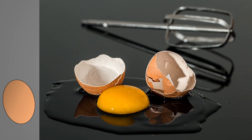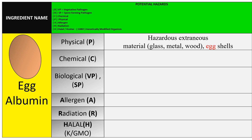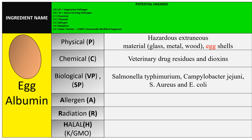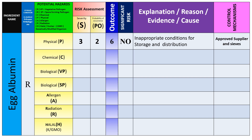The next example is the egg albumin hazard risk assessment — the same process applies to all raw materials. The HACCP team must all be present for this brainstorming. Physical hazards include hazardous extraneous materials: glass, metal, wood, and egg shells. Chemical hazards include veterinary drug residues and dioxins. Biological hazards include Salmonella and E. coli. Eggs are an allergen ingredient. Radiation is very rare. Halal is not applicable for egg production.